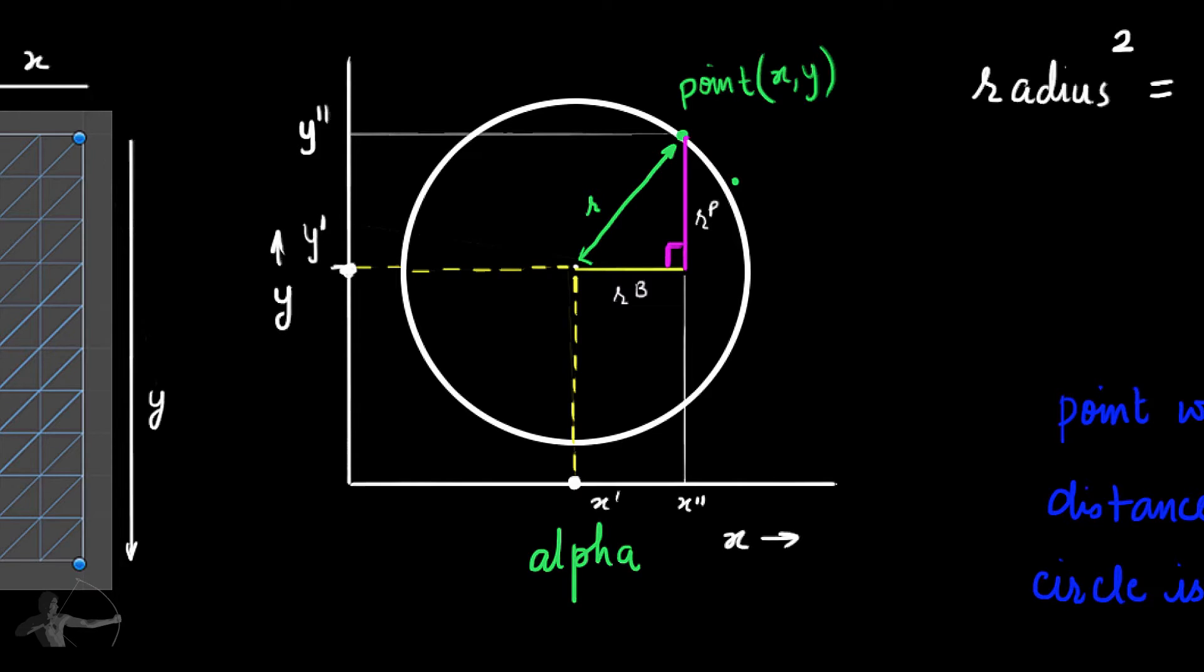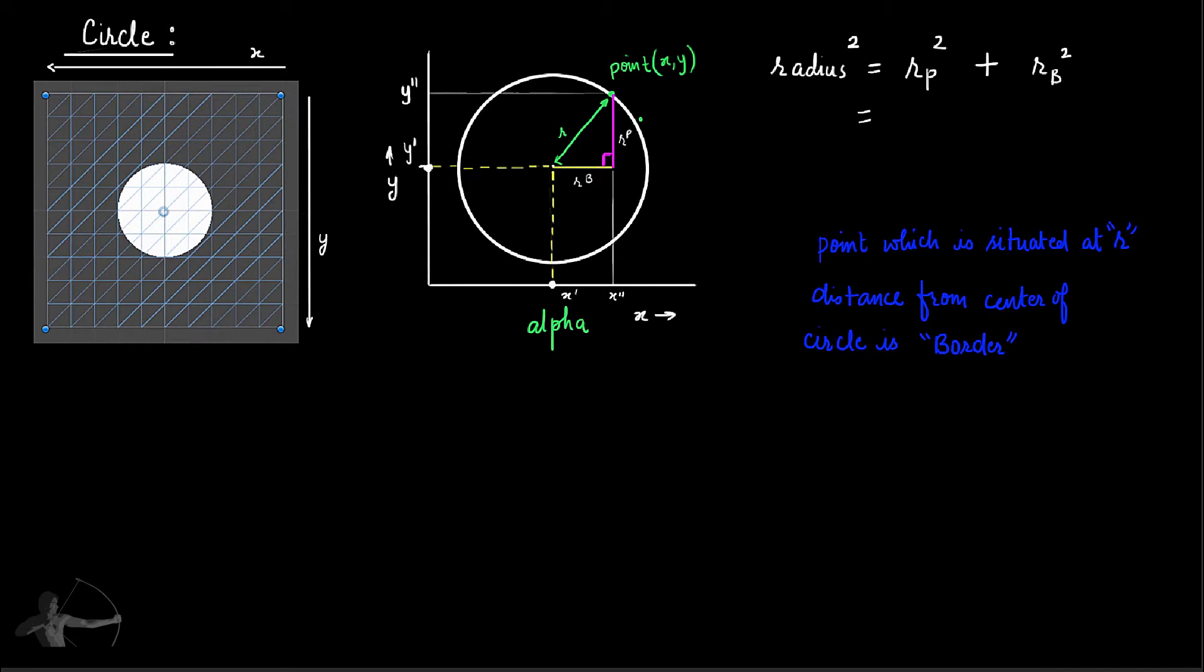So what is R_P? R_P becomes Y double dash minus Y dash because it begins with Y dash, not zero. From this complete line we will subtract this portion and this portion is Y dash. So R_P becomes (Y double dash minus Y dash) squared and R_B becomes (X double dash minus X dash) squared equals radius squared. And this is what the equation of the circle is.